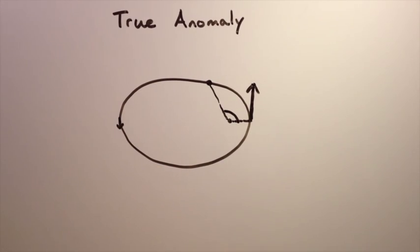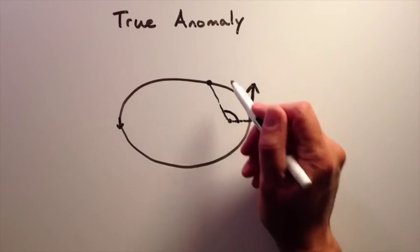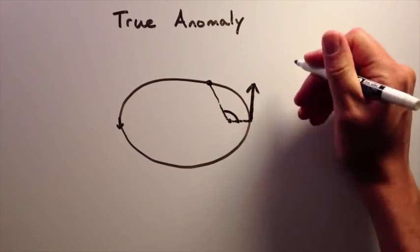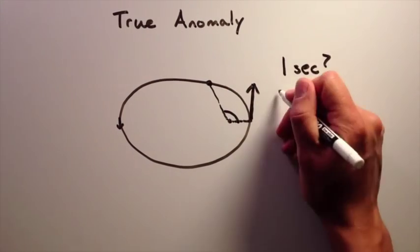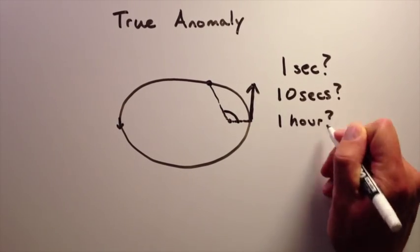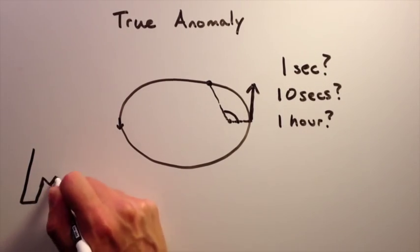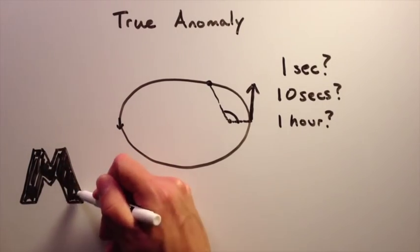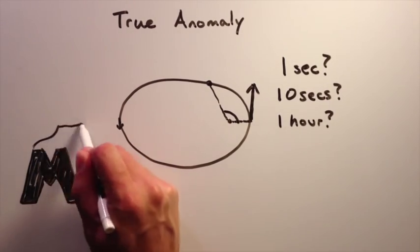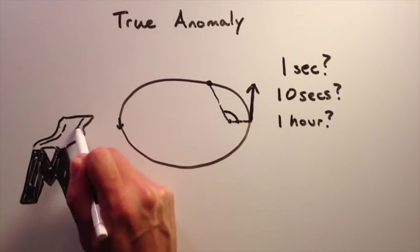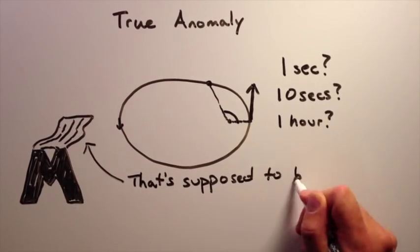The problem you usually encounter with orbits is this: We know the satellite's current position, but where will it be in one second, or ten seconds, or even one hour? Since the true anomaly isn't moving at a constant rate, this is a tricky problem to solve directly. This is where the mean anomaly comes in to save the day. It makes solving this problem easy.